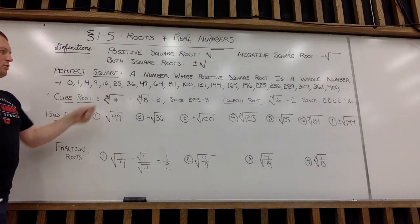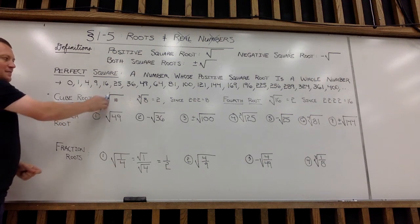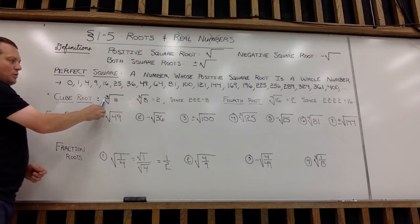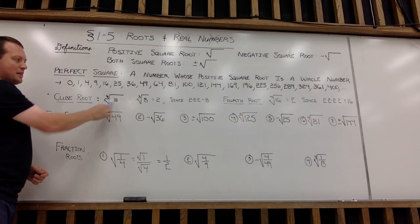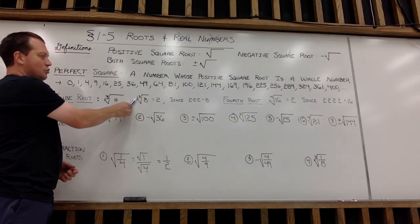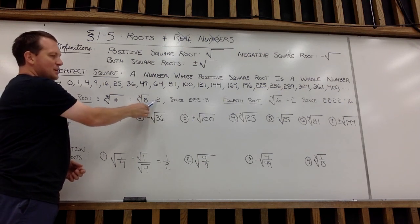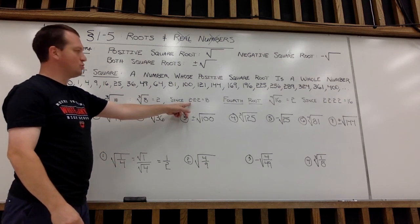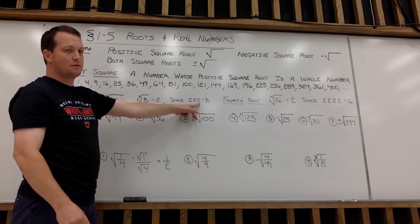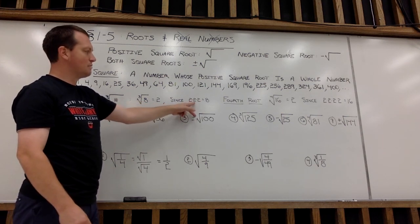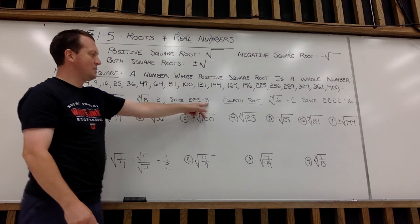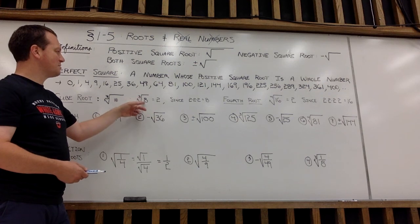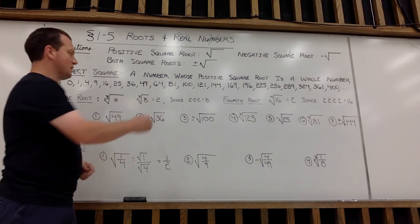If I have a little numerical value like a 3 in the elbow of my radical here, this indicates I want to take what we call the cubed root of my numerical value. For instance, if I take the cubed root of 8, that's going to be equal to 2. Why? Well, if I take that value 2 and multiply it by itself a total of 3 times, 2 times 2 is 4, times 2 is 8. So this is asking what number times itself 3 times is 8? The result would be 2.